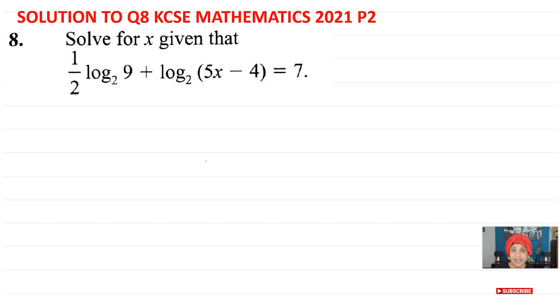So you can see it is a log question. What we have here is half log base 2 of 9 plus all this equal to 7. So what we want to do first is bring this half over here to the 9.